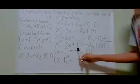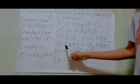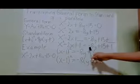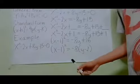we have acquired ourselves a perfect square trinomial, which is x squared minus 2x plus 1 equals negative 8y plus 15 plus 1.